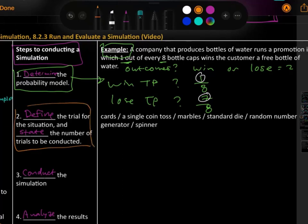Let's go ahead now and define the trial for this situation and state the number of trials to be conducted. So what can we use here? There are six available probability tools: cards, tossing a single coin, marbles, standard die, random number generator, and a spinner.